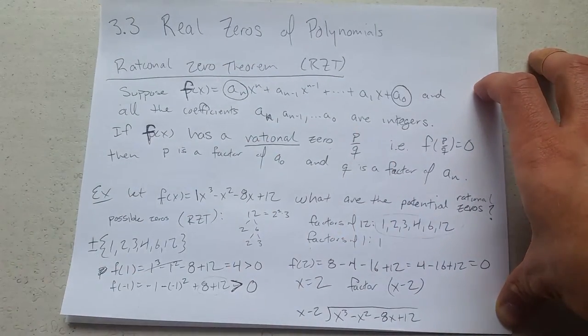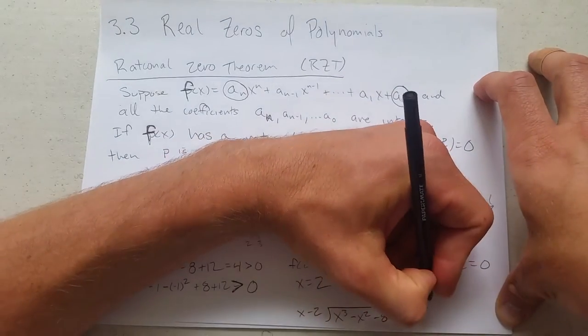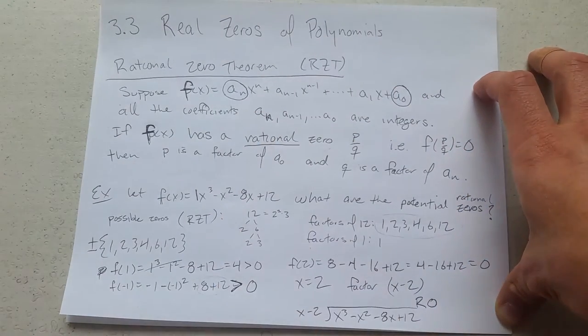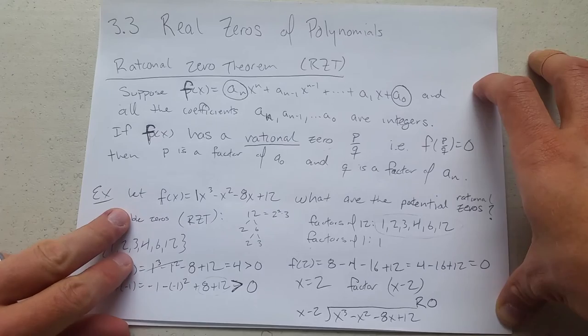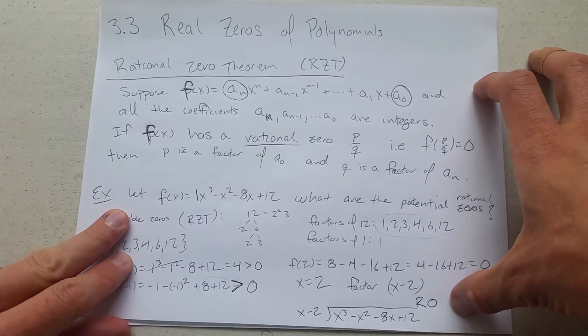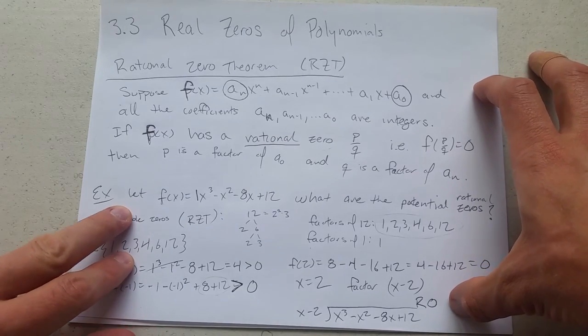...is dividing the original polynomial x³ - x² - 8x + 12. And you're going to divide that by x - 2. And remember, if everything worked out, you should be getting remainder 0 here. So I'm not going to go through with the division, but absolutely, you can do that.